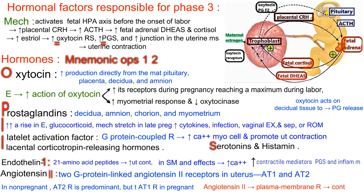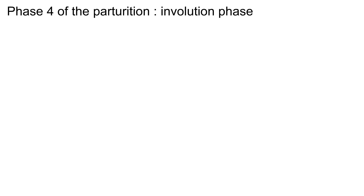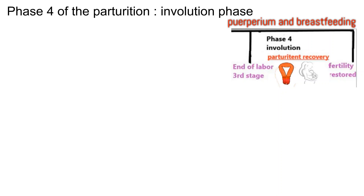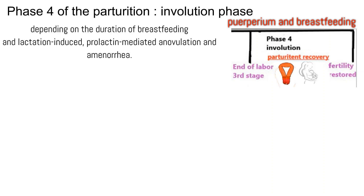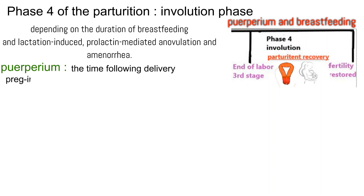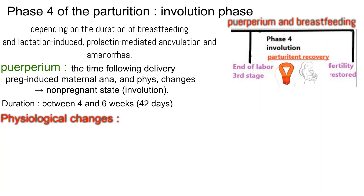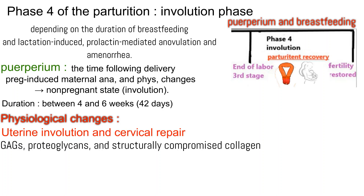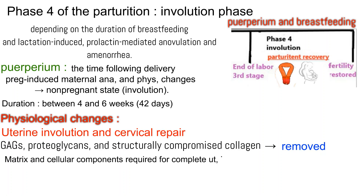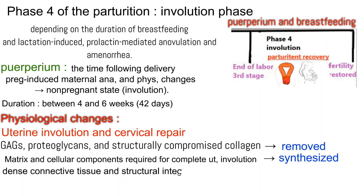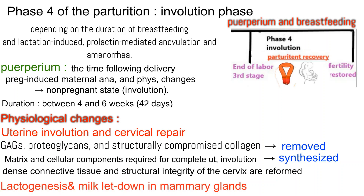Phase 4: Puerperium and breastfeeding — starts at the end of the third stage of labor and ends when fertility is restored, depending on the duration of breastfeeding and lactation-induced prolactin-mediated anovulation and amenorrhea. Puerperium is the time following delivery during which pregnancy-induced maternal anatomical and physiological changes return to the non-pregnant state (involution). Duration is 4 to 6 weeks (42 days). Changes include uterine involution, cervical repair, removal of glycosaminoglycans and compromised collagen, and reconstitution of connective tissue. Early puerperium includes onset of lactogenesis and milk let-down.